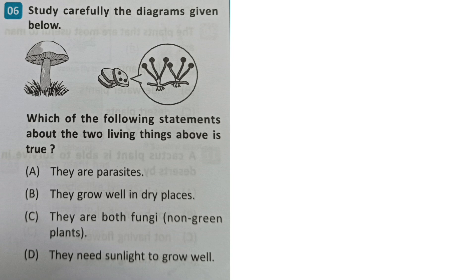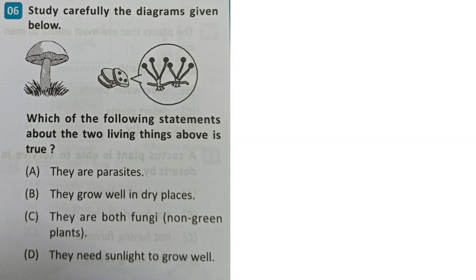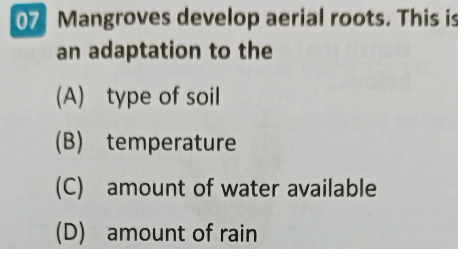Study carefully the diagram given below. Which of the following statements about the two living things shown is true? Options: they are parasites; they grow well in dry places; they are both fungi - non-green plants; they need sunlight to grow well.